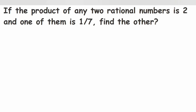They have given one number which is 1/7, and the product of the two numbers is 2. We have to find out the other number. So it's like we are multiplying the two numbers and got the answer 2, in which one of the numbers is 1/7.